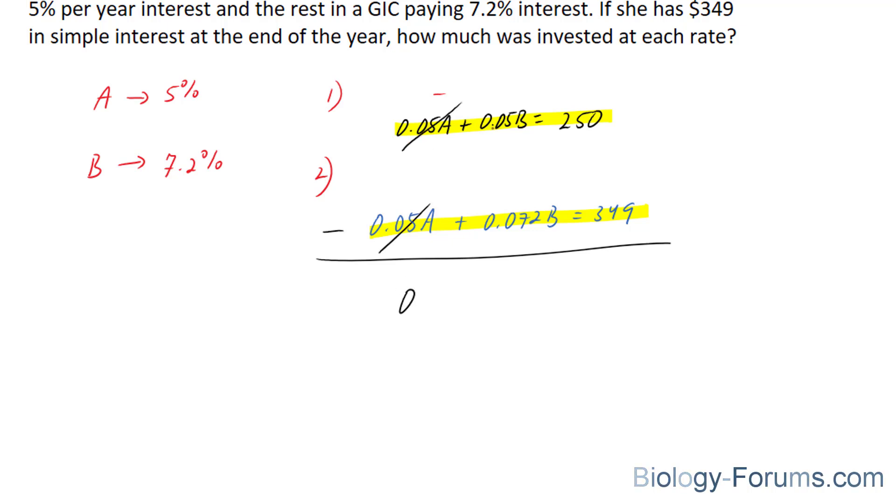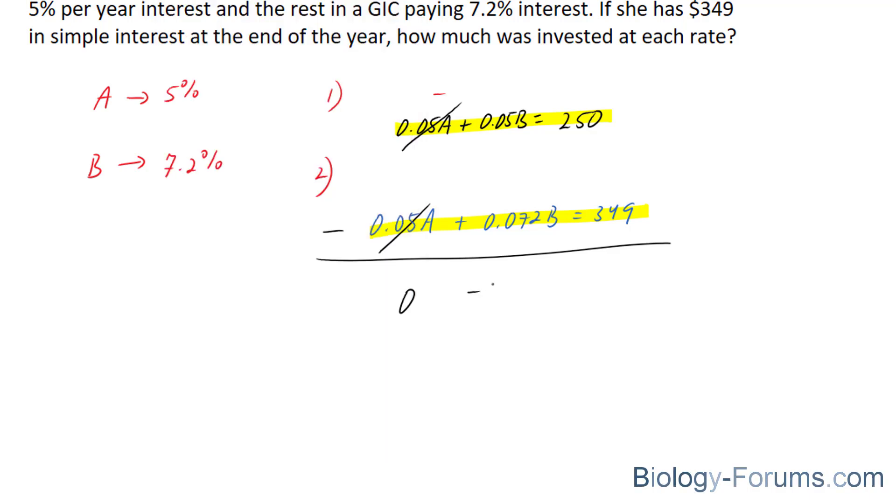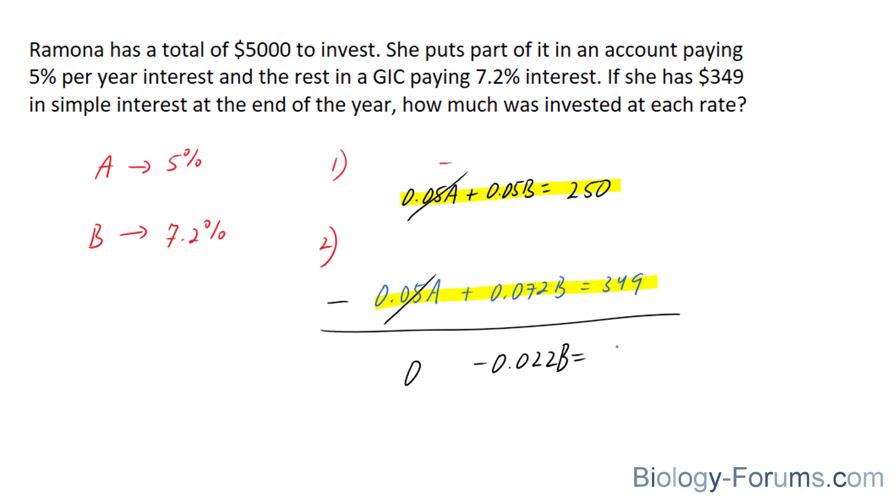So if we subtract them, we get 0. This number subtracted by this number is equal to an answer of negative 0.022, and this number subtracted by that number is negative 99.